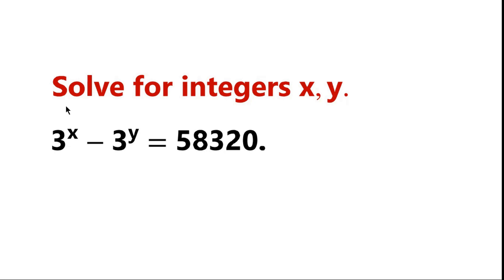Solve for integers x, y, given that 3 to the power x minus 3 to the power y equals 58,320.